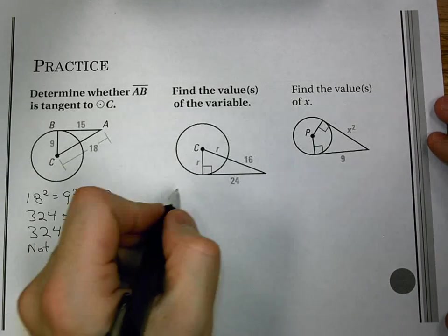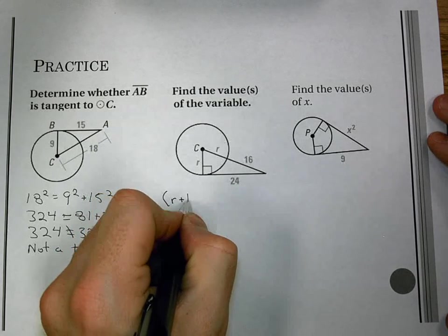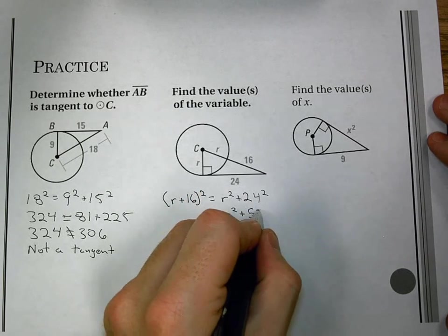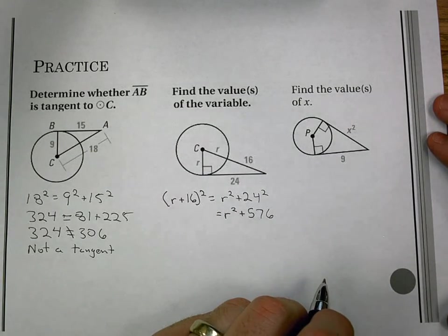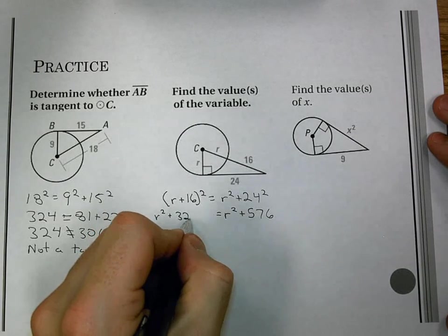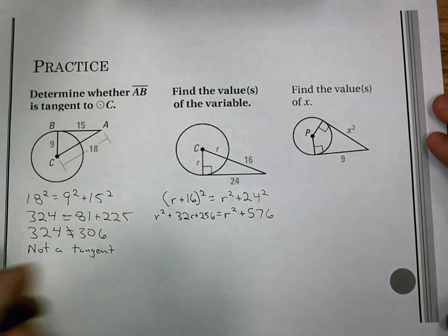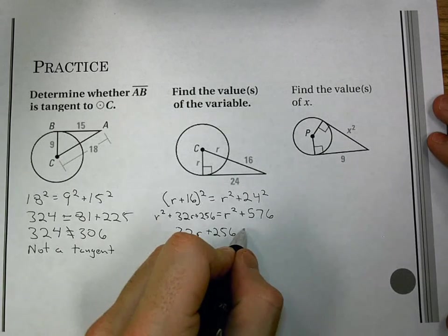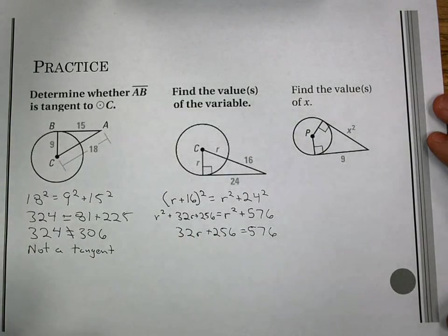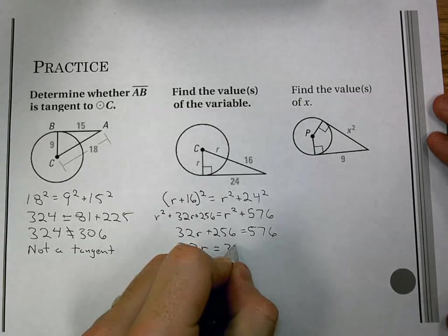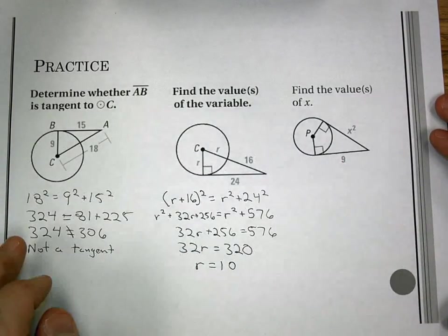Next one, we're going to have our r again, so we're going to say our hypotenuse that we want is r plus 16 squared equals r squared plus 24 squared. I get r squared plus 576 on the right side. When I square r plus 16, it is not r squared plus 16 squared. We're actually using the box method, and when you do that, you get r squared plus 32r plus 256. I can now subtract the r squareds from both sides. I get 32r plus 256 equals 576. We then get 32r equals 320, and r is 10. So if they asked for our radius, it would be 10 in this case.